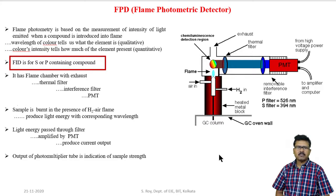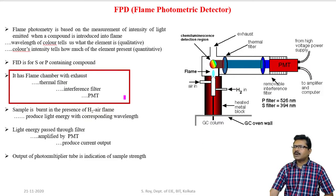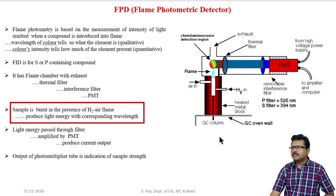Determination of sulfur and phosphorus compounds is the job of the flame photometric detector. As per the construction, it has a flame chamber with a heated block, along with a thermal filter and interference filter, and also a photomultiplier tube. Sample from the column is introduced through a metal heated block. Air and hydrogen mixture produces the flame. When the sample is introduced through this block and contacts the flame, it produces light with a specific wavelength. The sample is burned in the presence of hydrogen-air flame — hydrogen acts as fuel and air as oxidant. This burning effect produces light energy with a corresponding wavelength.